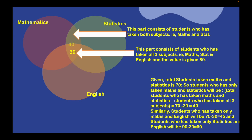Similarly, students who took only Mathematics and English equals 75 minus 30, which is 45. Students who took only Statistics and English equals 90 minus 30, which is 60.